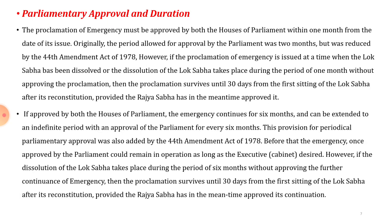Regarding parliamentary approval and duration: the proclamation of national emergency must be approved by both houses of parliament within one month from the date of its issue. Originally the period allowed was two months but was reduced by the 44th Amendment Act of 1978. However, if the proclamation is issued when the Lok Sabha has been dissolved, or the Lok Sabha is dissolved during the one-month period without approving it, then the proclamation survives until 30 days from the first sitting of the Lok Sabha after its reconstitution, provided the Rajya Sabha has in the meantime approved it.